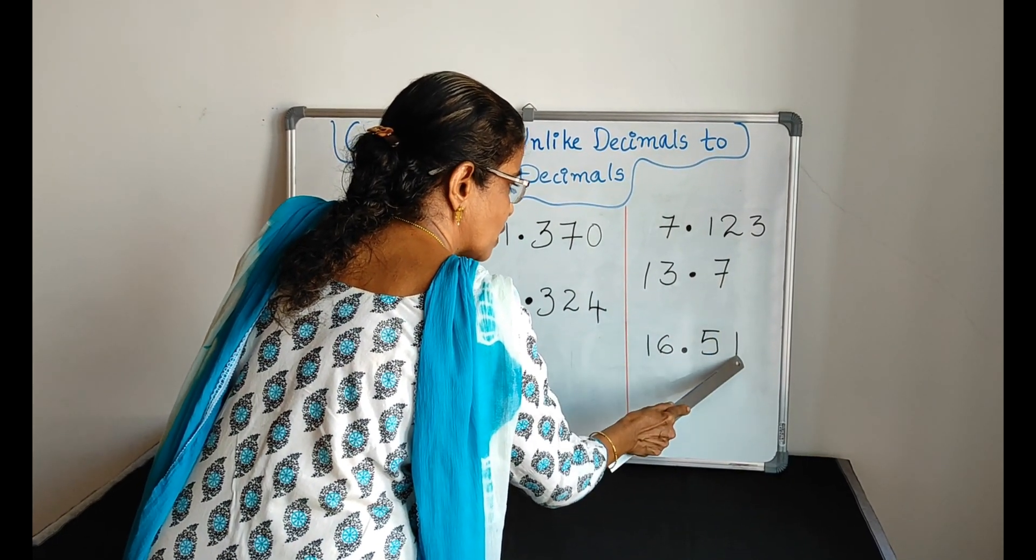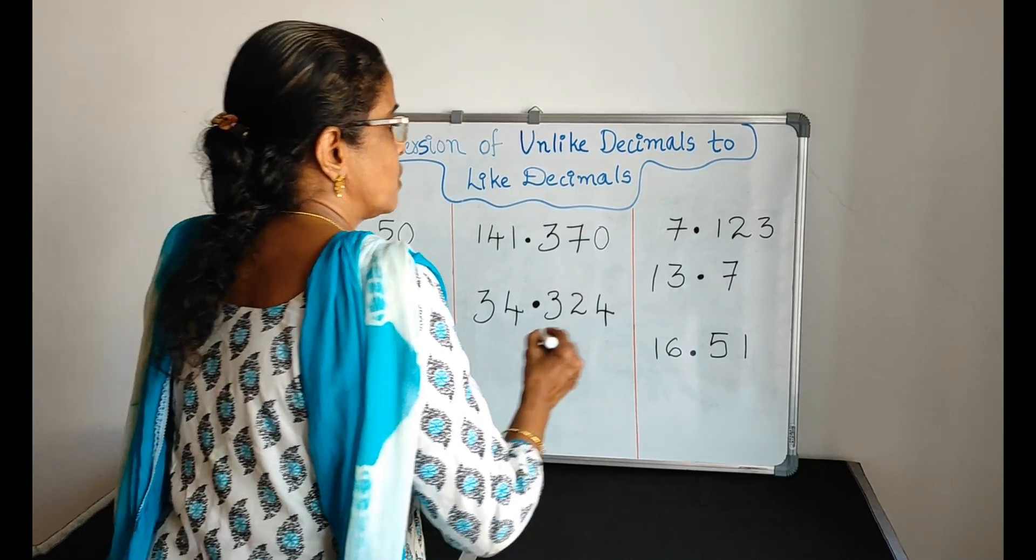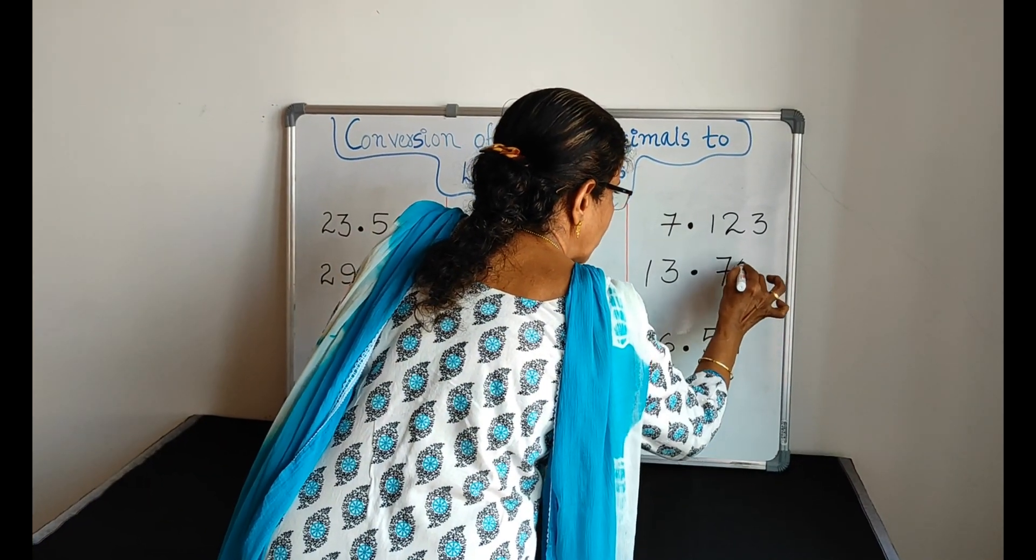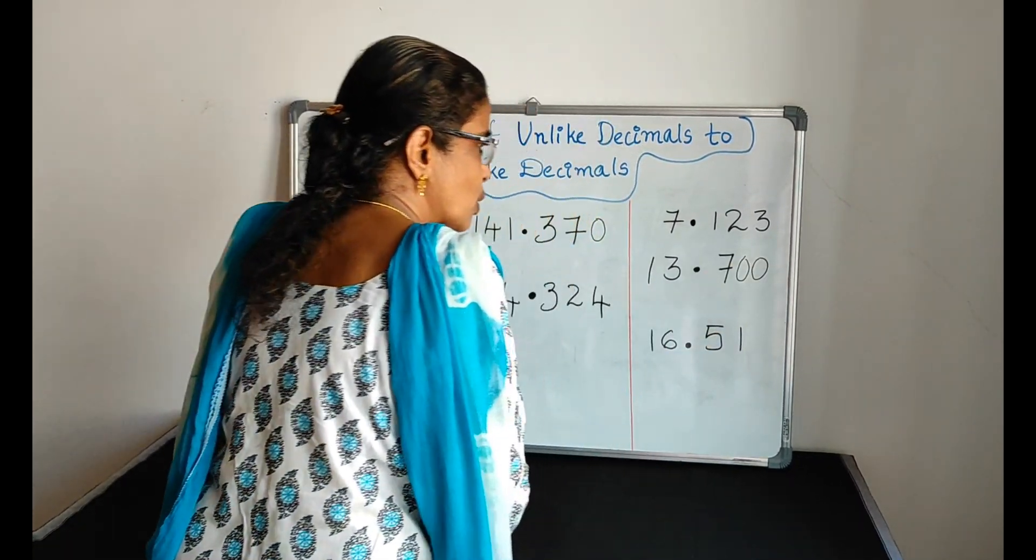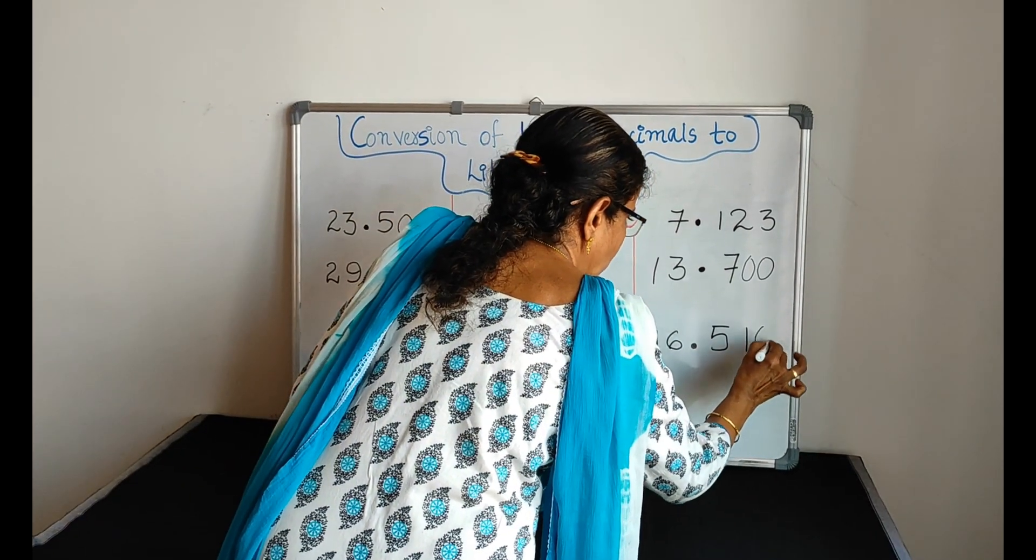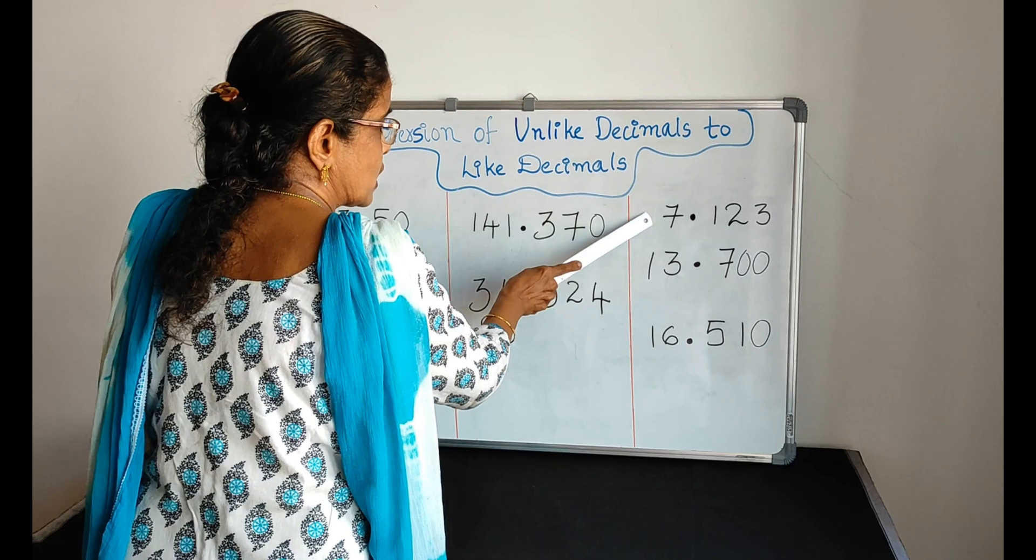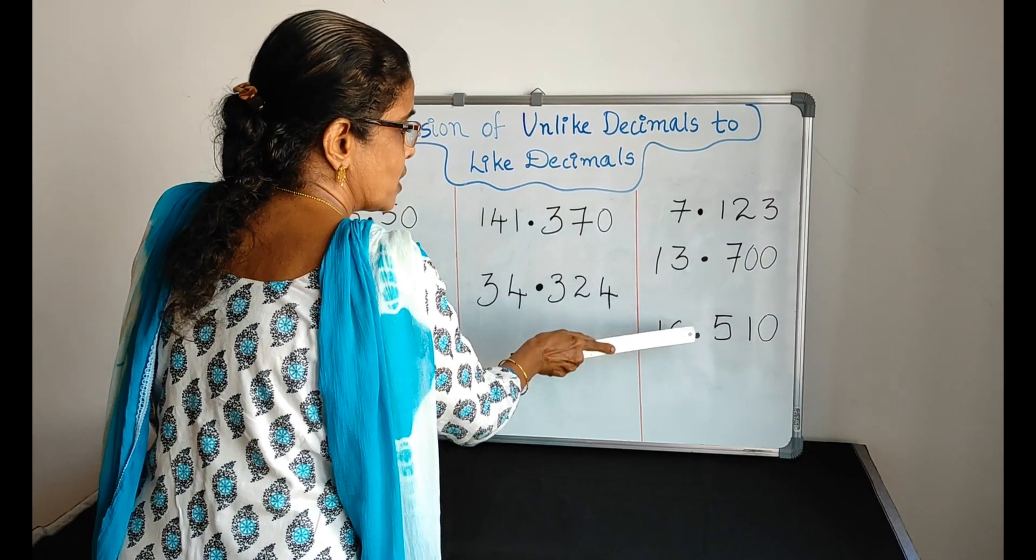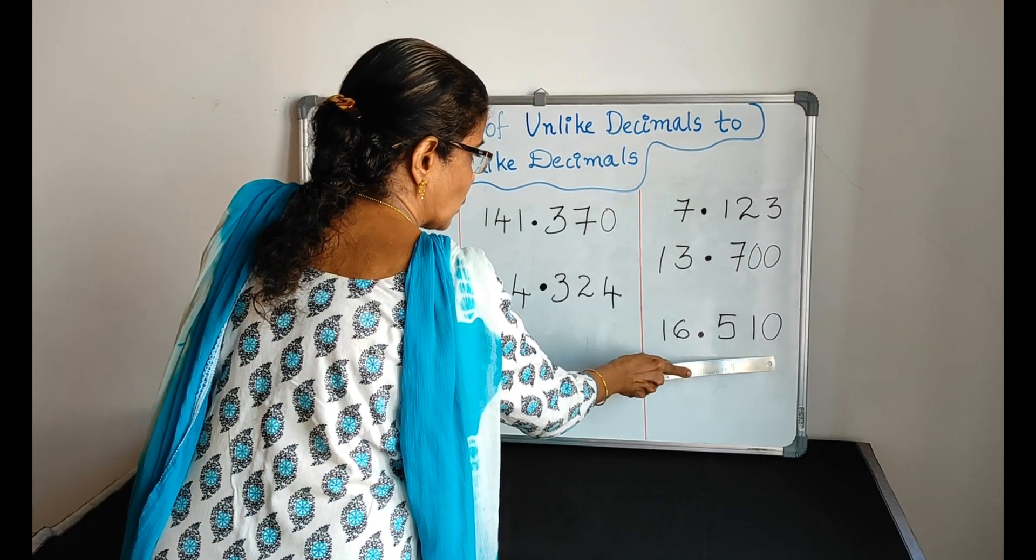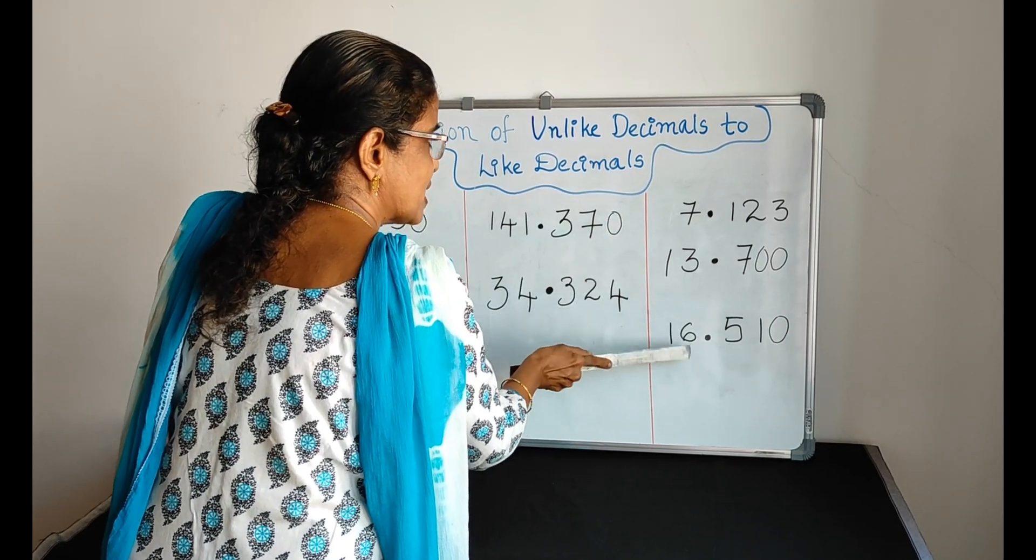So you have to make it three here and here also. How many zeros do we have to add? Here we have to add two zeros. Here we have to add two zeros. Here we have to add only one zero. Now, 7.123, 13.700, 16.510. Now they are like decimals.